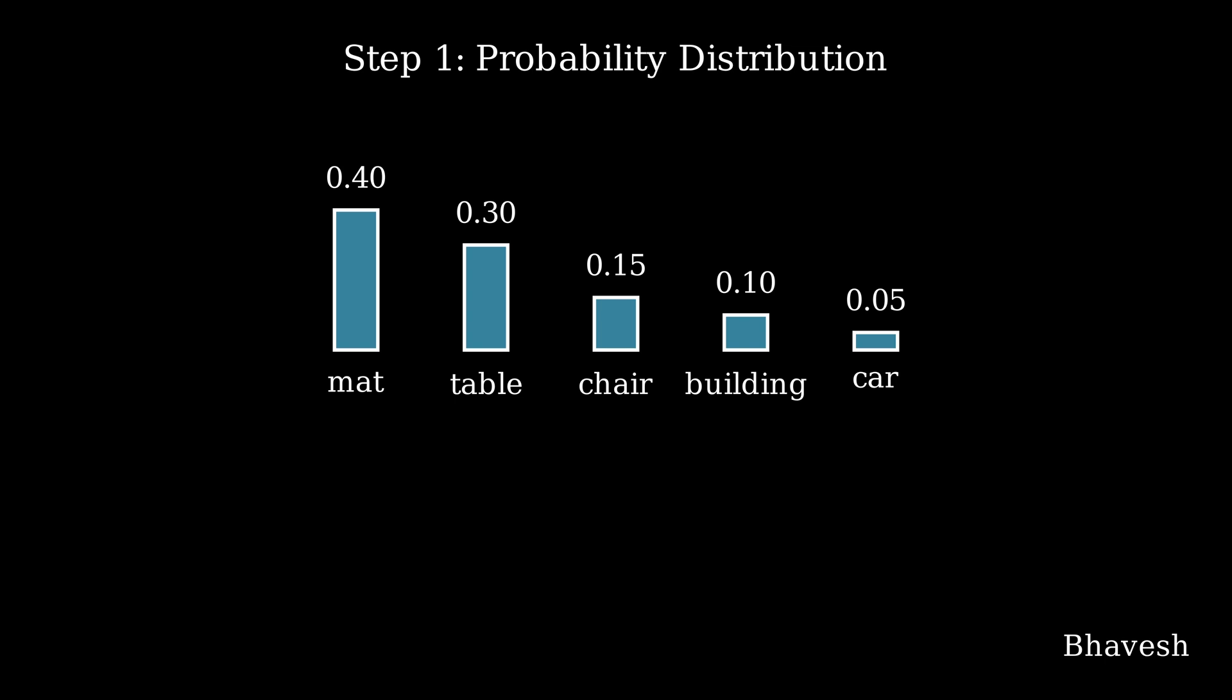Let's again start with the same input sentence: 'The cat sat on the.' We'll look at what the next word will be predicted based on Top-P sampling. Step 1 is the probability distribution. Imagine you have a corpus of 5 words that follow this sequence: mat, table, chair, building, and car. This is the corresponding probability distribution.